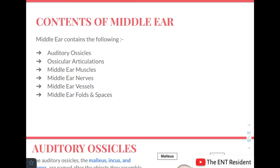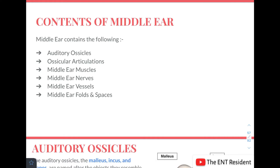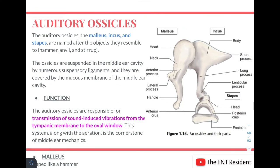Today we are going to finish the anatomy of the middle ear by talking about its contents. The middle ear contains the auditory ossicles — mainly the malleus, incus and the stapes — the ossicular articulations, middle ear nerves, muscles, vessels, and the middle ear folds and spaces. Let's start with auditory ossicles first.